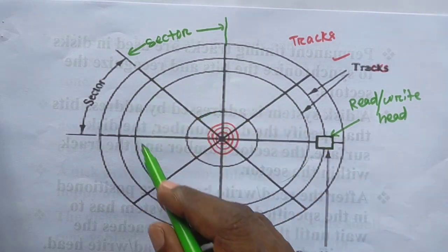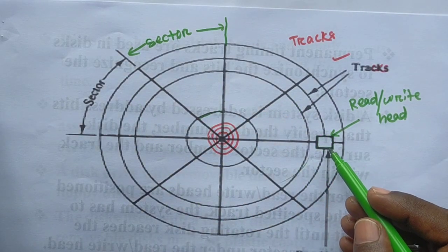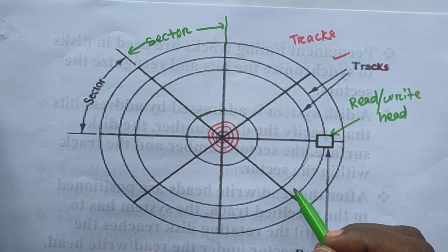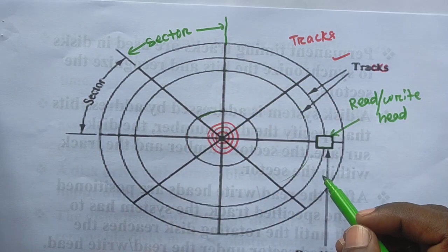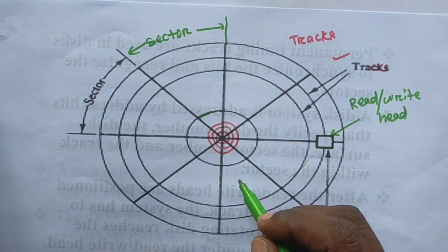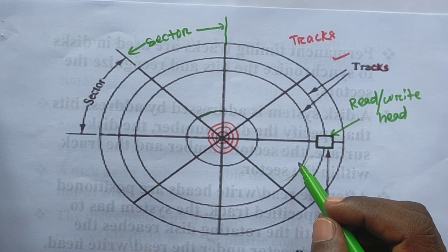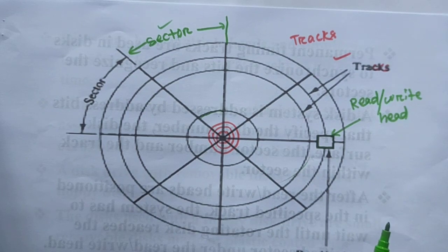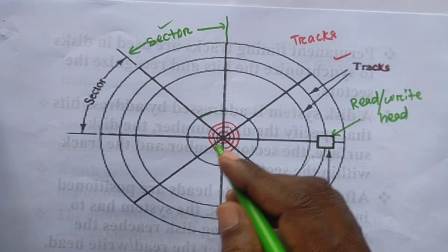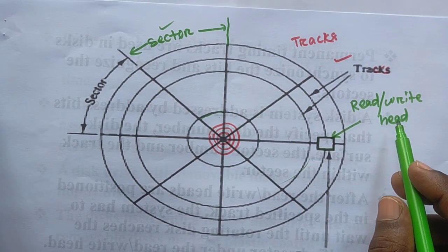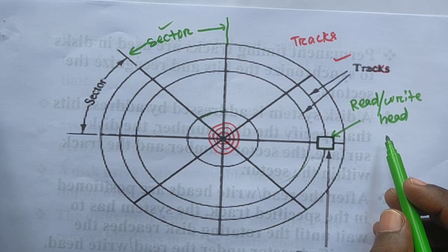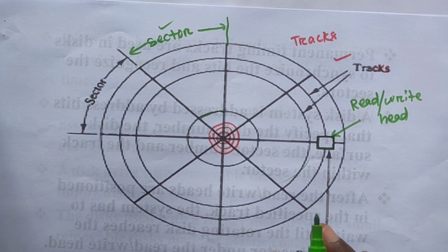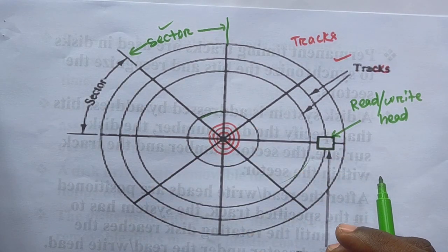Suppose one track's data is finished writing, then the head jumps to another track. Similarly for reading — when one track is done, it jumps to the next. Whenever it jumps from one track to another, it also covers the corresponding sectors. This is how the read-write head moves from one track to another.